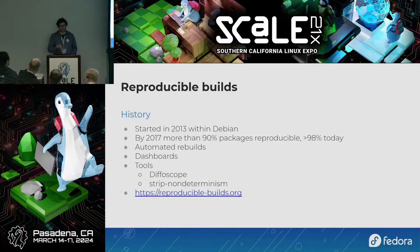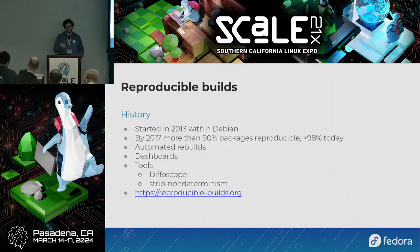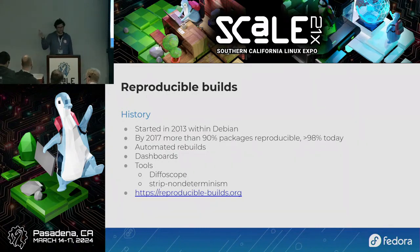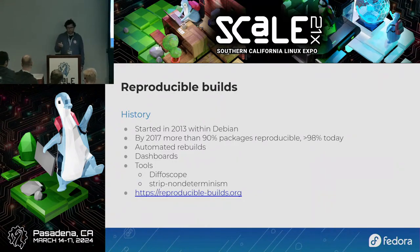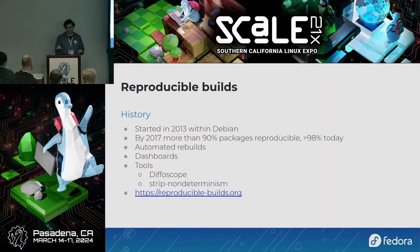The reproduciblebuilds.org effort, the reference effort around reproducible builds, was started in 2013 within Debian. It encompassed both building packages and checking reproducibility, but also building a lot of tooling. By 2017 the vast majority of the distribution was reproducible, and today over 98% of packages reproduce. This isn't just Debian anymore — Arch Linux, FDroid for Android apps, and many other distributions have embraced this process. The general approach: take build artifacts from your official build system, do builds locally by whatever process, and match them. If they match, they're good; if not, something is wrong and you fix it.